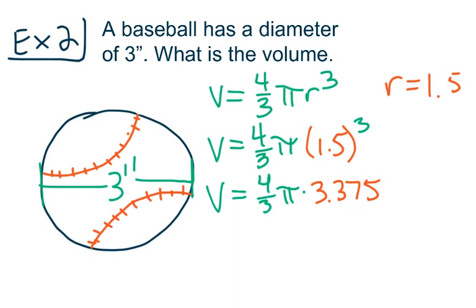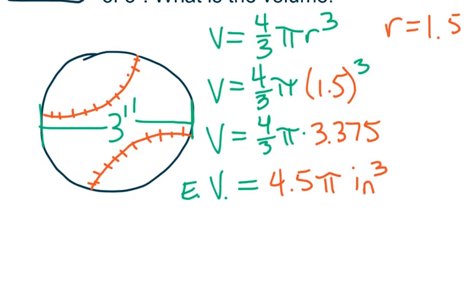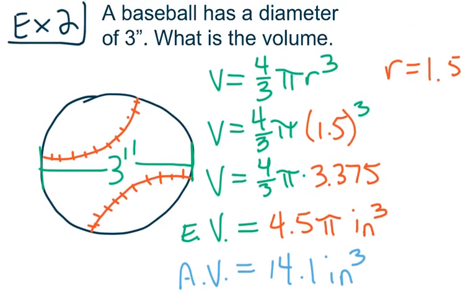Take that number, multiply it by 4 thirds — or multiply by 4 then divide by 3 — and we get an exact volume of 4.5. So our exact volume is 4.5 pi inches cubed. For our approximate volume, we take that 4.5 and multiply it by pi, giving us approximately 14.1 inches cubed. Exact volume is 4.5 pi inches cubed; approximate volume is 14.1 inches cubed. As a reminder, even though they don't look it, these two values are nearly equivalent to each other.